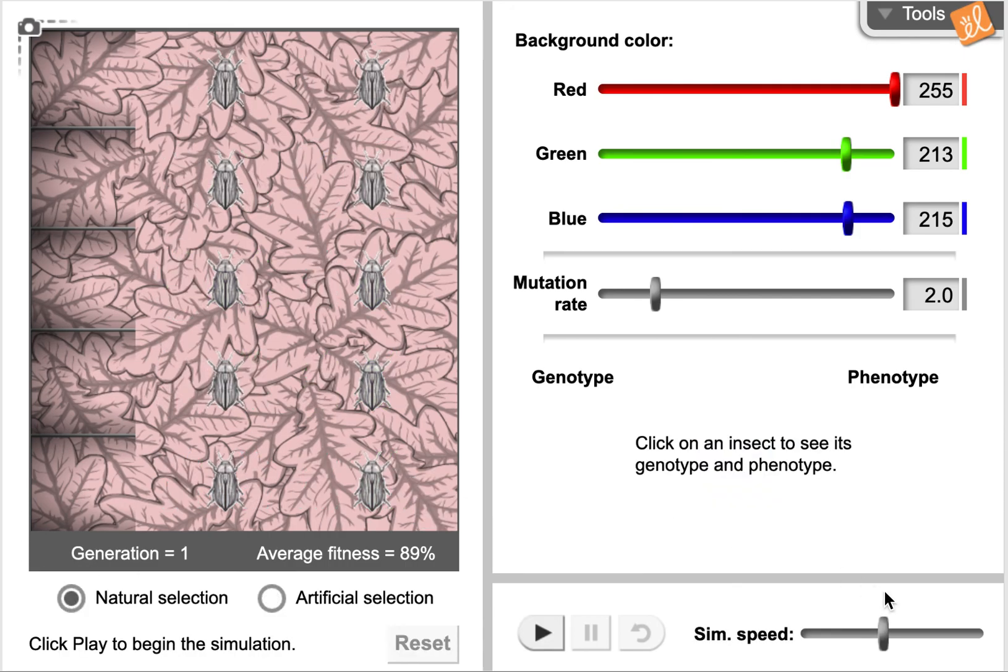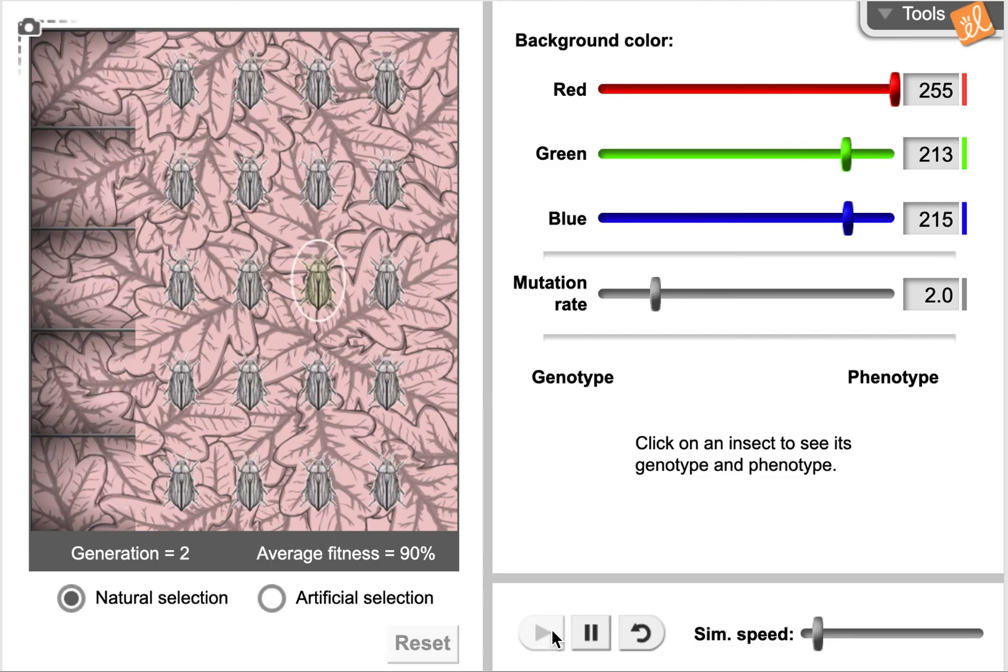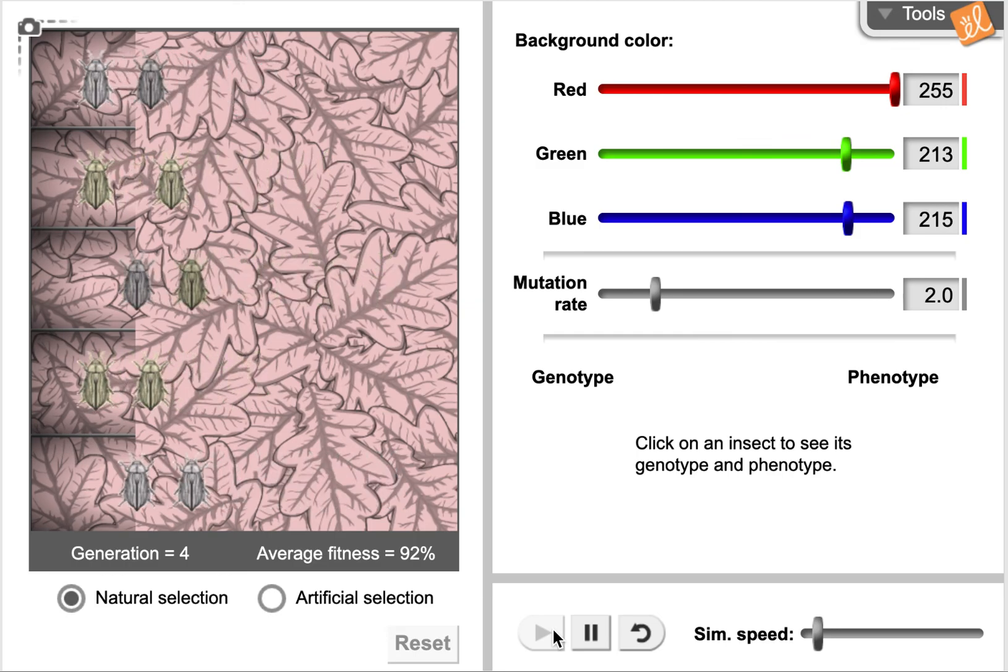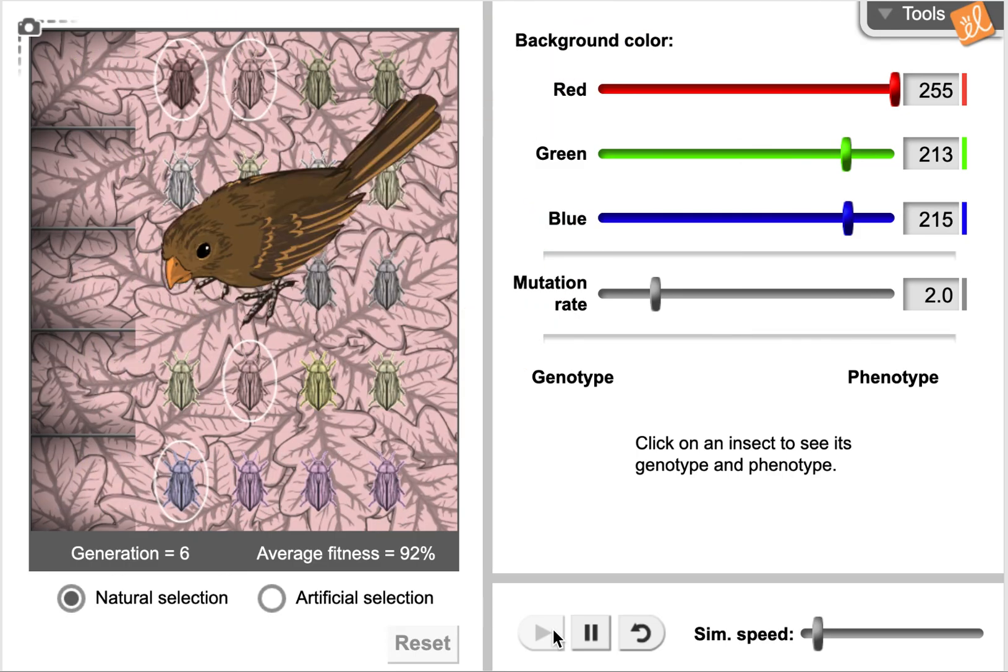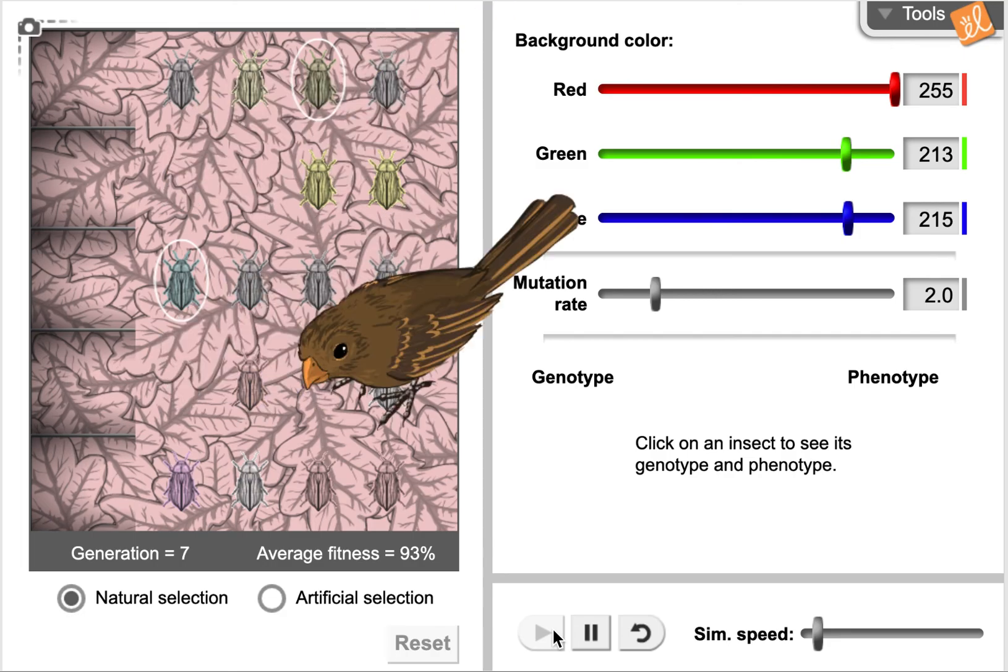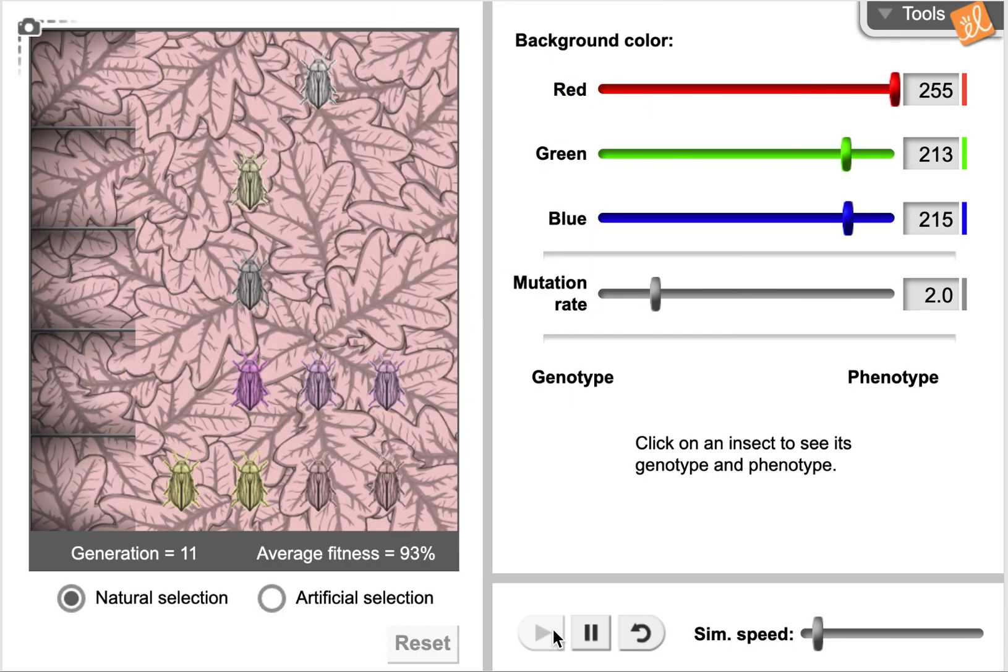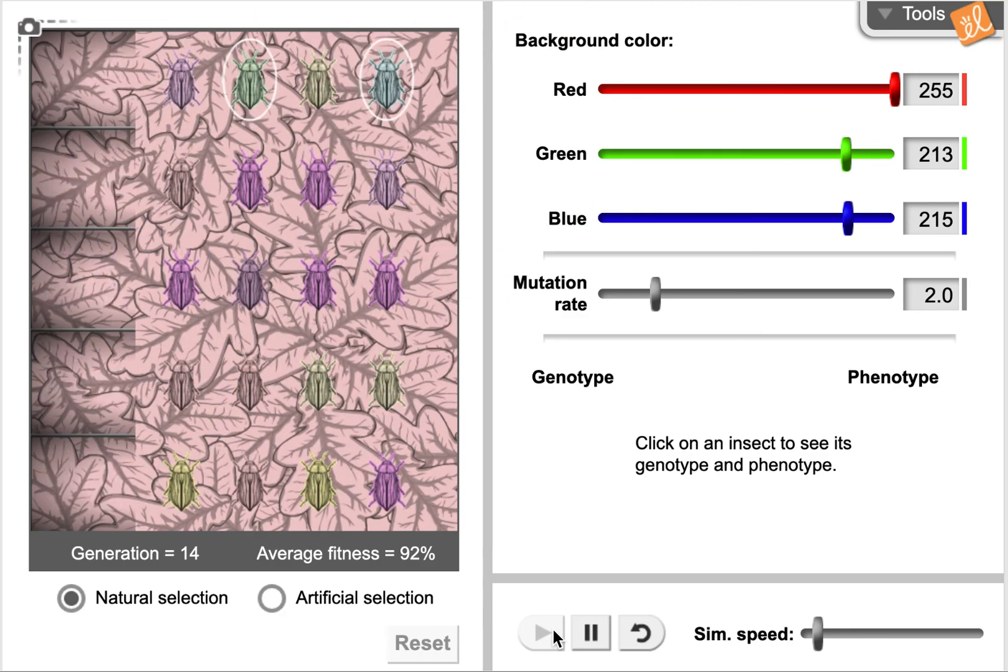I'm going to crank up the simulation speed so that this happens a little bit quicker. I'm not going to go all the way out because it'll be too fast to recognize. But what I want is I want to see how many generations it takes for the insects to match the color of the leaves that I've now set. And the reason that I am doing that is I want to see which is faster, natural selection or artificial selection.